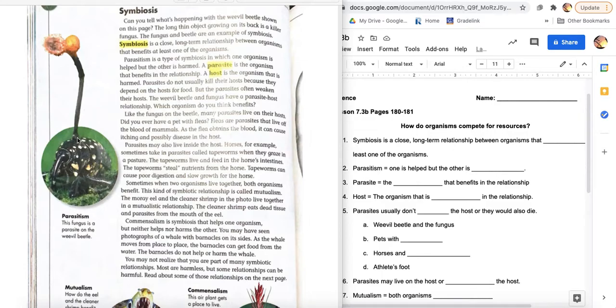The fungus is getting the benefit, guys. He's pulling nutrients out of this weevil and living off his back. But if this fungus kills this bull weevil, there's no nutrients for it to pull. And then the fungus dies.